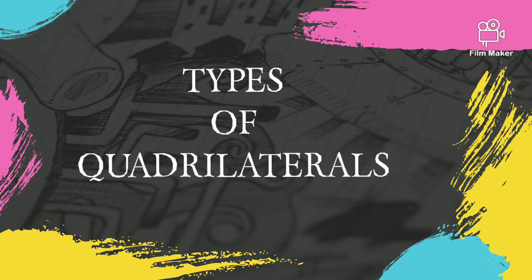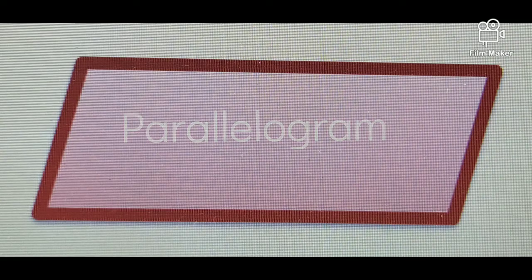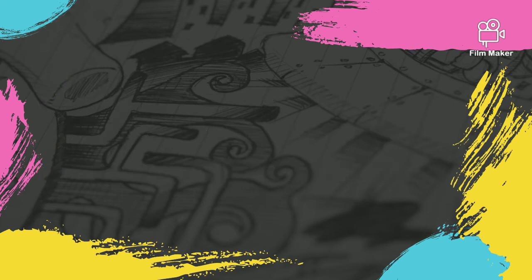Here are the types of quadrilaterals with their name, figures, and properties. Number one is parallelogram. In a parallelogram, opposite sides are parallel, opposite sides are equal, and opposite angles are equal.